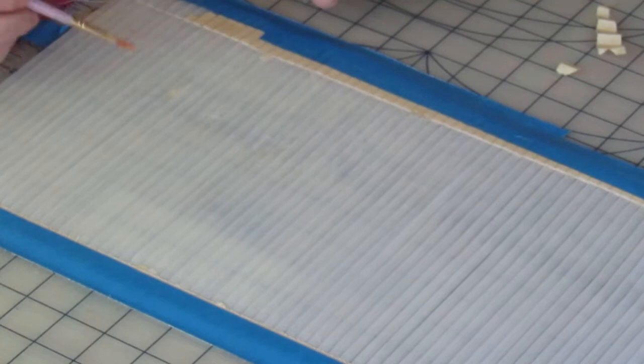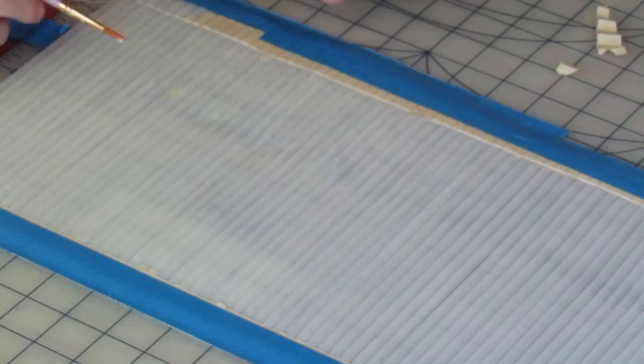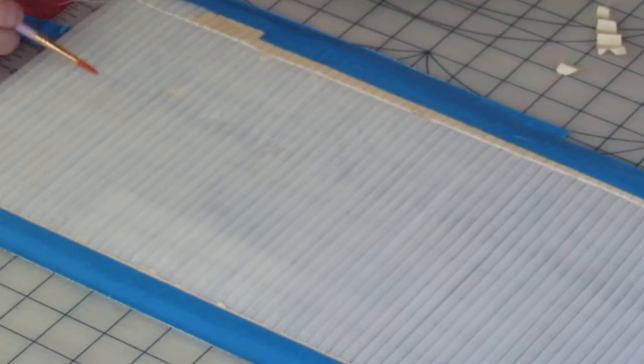Alrighty, almost done here. And in some cases, you can actually leave the edge paper on until you're going to, like, you can actually sew through it as well if you need some additional stabilization. Some machines do better with flimsy fabrics than others. Other machines want, like, meat.